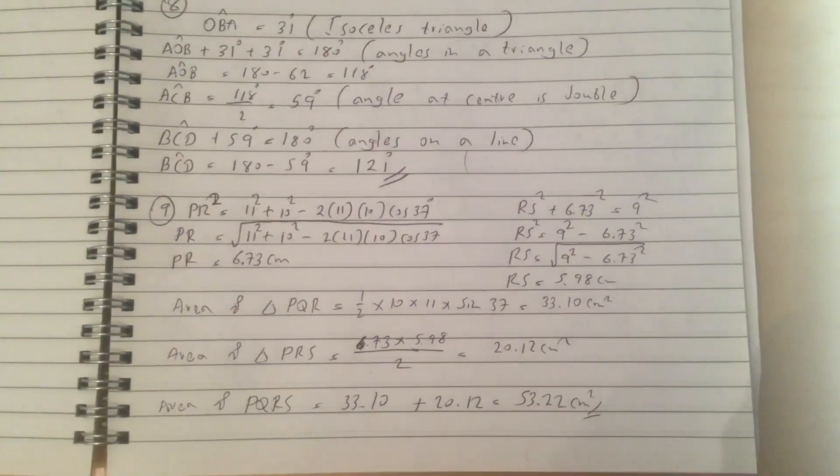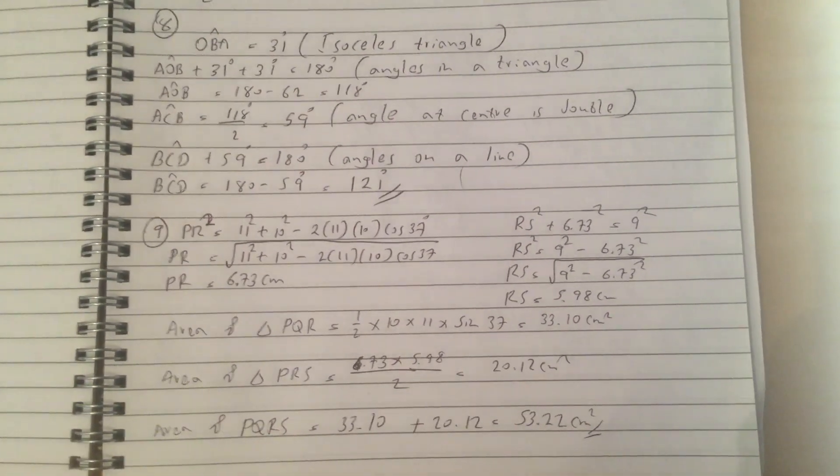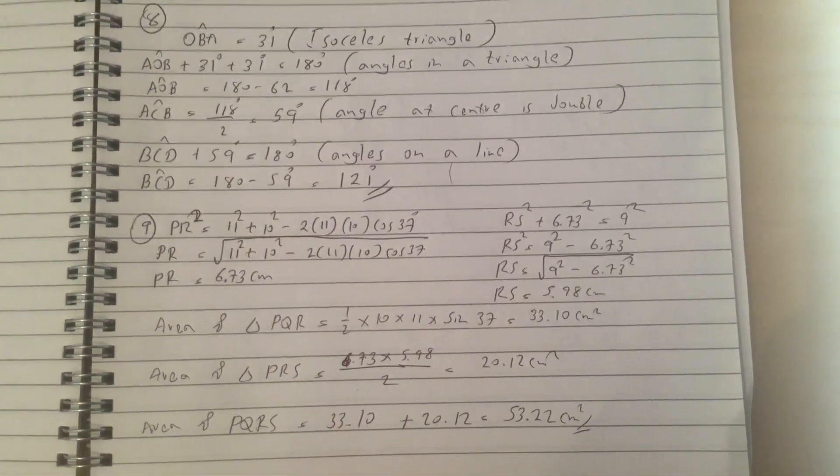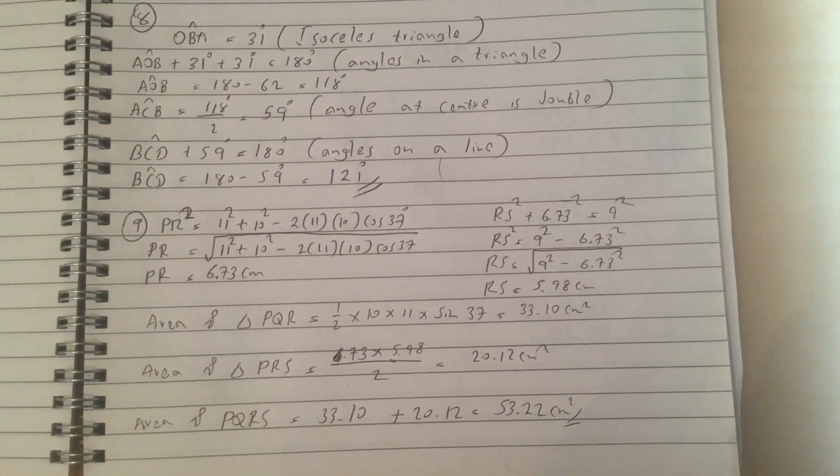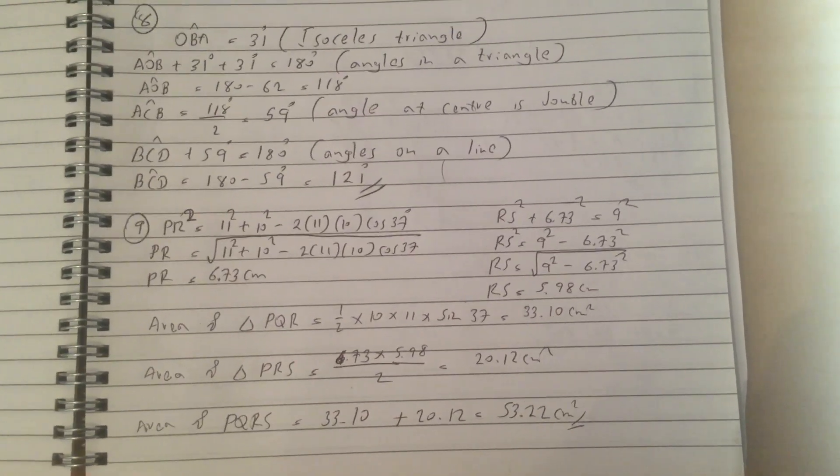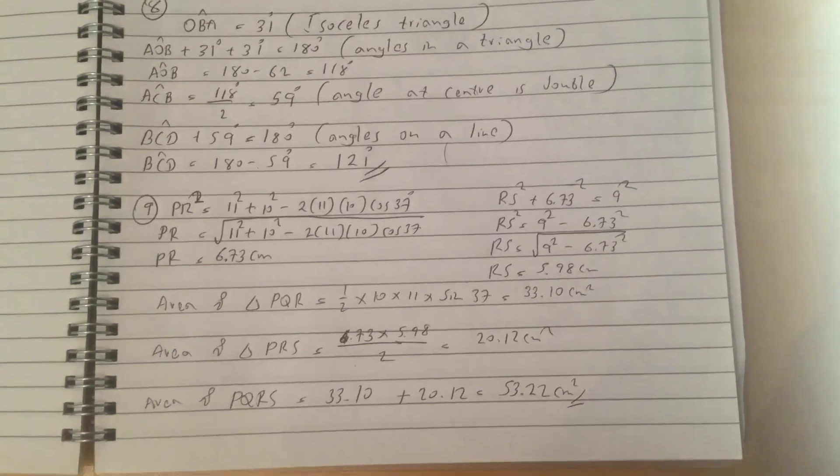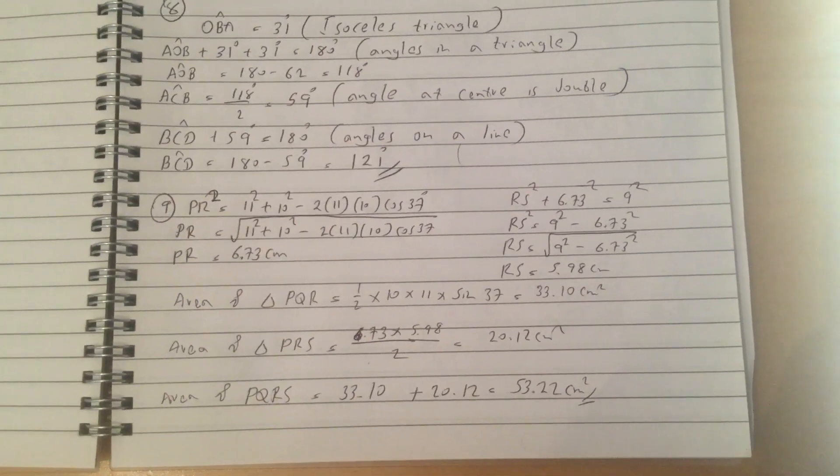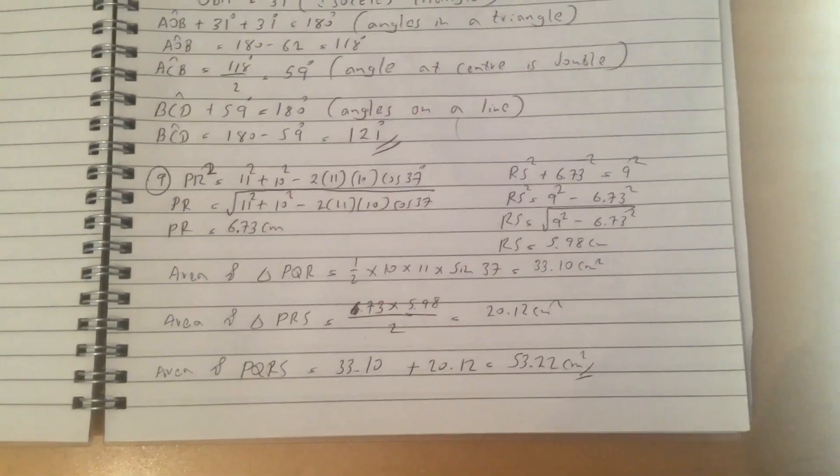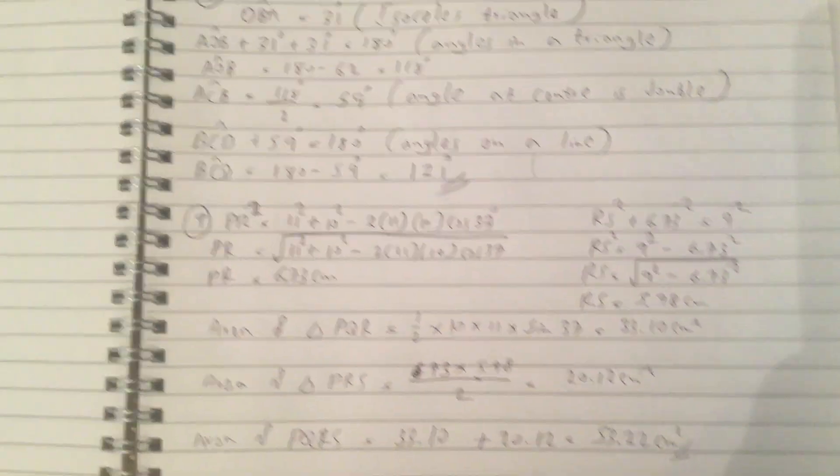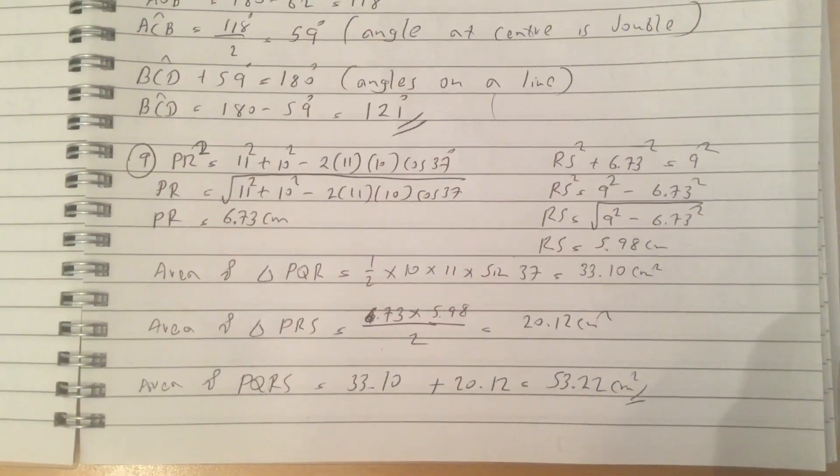Question 9, so this is a big question. First of all you've got to work out PR using the cosine rule, and then once you've got PR you use that value and the 9 given in the diagram to work out RS using Pythagoras theorem. You work out the area of triangle PQR using half AB sine C, and you work out the area of triangle PRS using base times height over 2, and you add the two areas to get PQRS. So it's quite a simple question if you break it down. I'll pause it there if you want to read it.